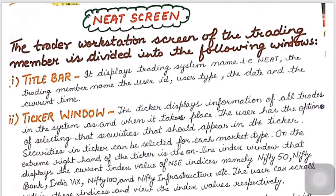The first one is the title bar. In our trading system, the name that appears is NEAT. Then the trading member name, user ID, user type, date, and current time — these details are displayed.